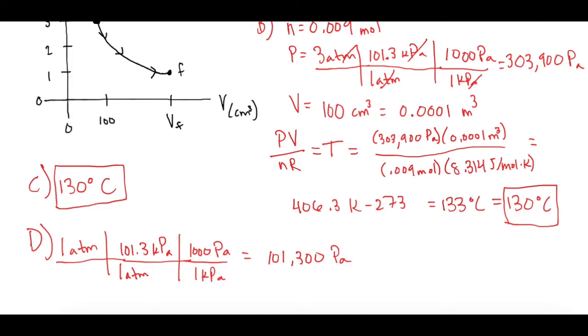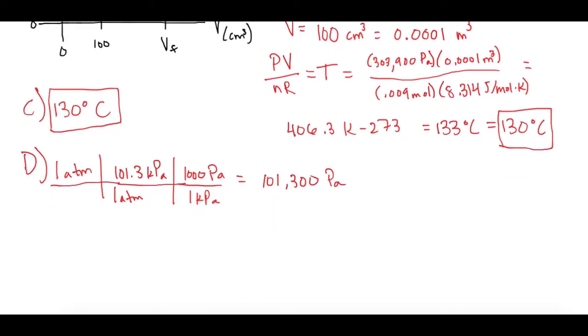So now we can plug all of our numbers into the same equation but with a new pressure to solve for volume. So PV, I guess it's not the same equation and we solve it for volume so we'll divide both sides by P. So that gives us V is equal to nRT over pressure.